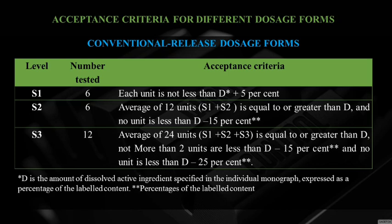If any unit falls below D + 5%, the sample proceeds to S2 stage where an additional six units are tested. Average of 12 units (S1 + S2) must be ≥ D and no unit less than D minus 15%. If any unit is below D minus 15% or average is less than D, the sample proceeds to S3 stage. In S3, 12 more units are analyzed; average of all 24 units must not be less than D, only two units may be below D minus 15%, and no unit may be less than D minus 25%.